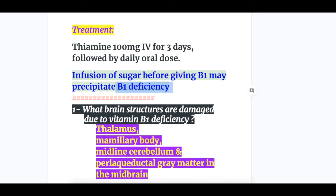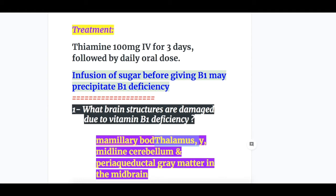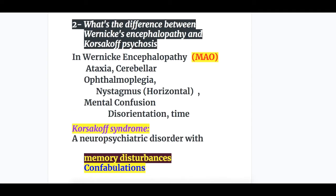Now, answers to the questions. What brain structures are damaged due to vitamin B1 deficiency? Answer: the brain structures damaged are the thalamus, mammillary body, midline cerebellum, and periaqueductal gray matter in the midbrain.